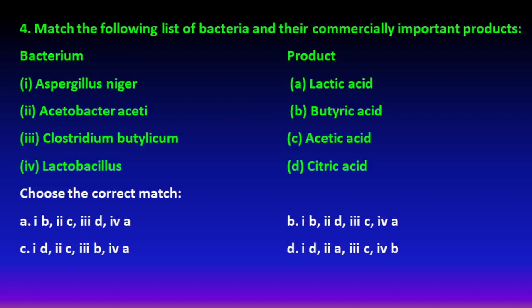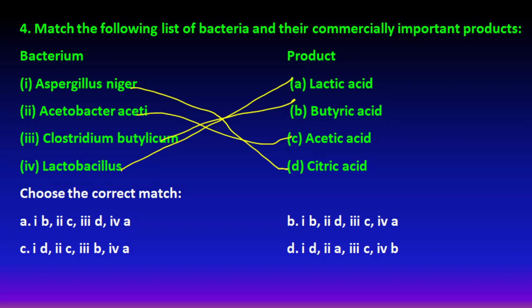Next question: match the following list of bacteria and their commercially important products. Lactobacillus produces lactic acid, Clostridium butylicum produces butyric acid, Acetobacter produces acetic acid, and Aspergillus niger produces citric acid. So option C is the right answer.